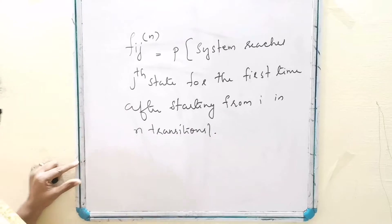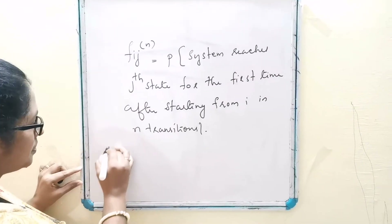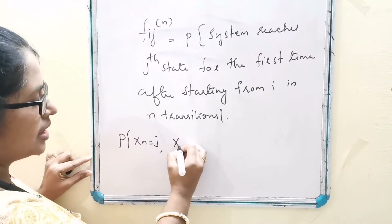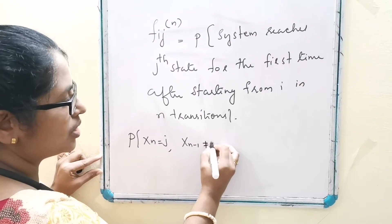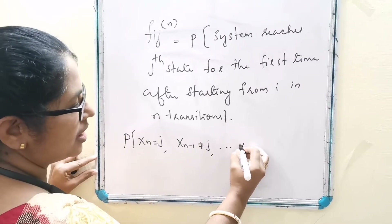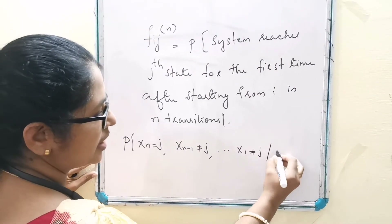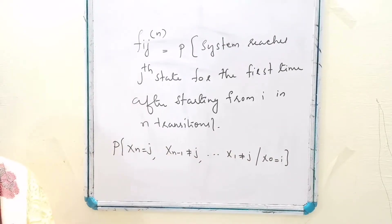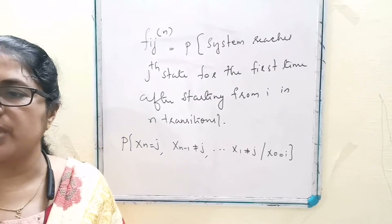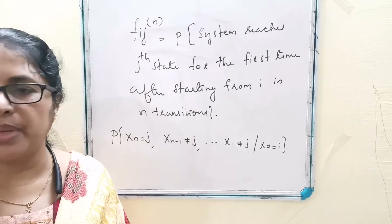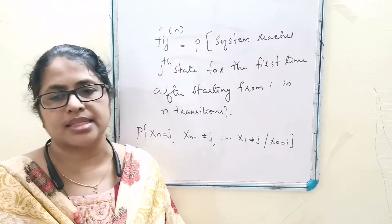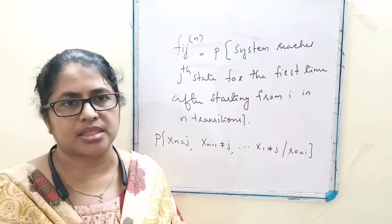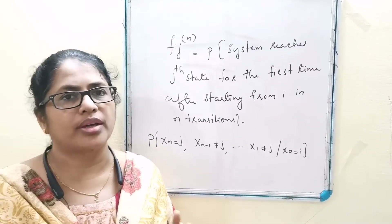That is, the probability of X_N equal to J, X_{N-1} not equal to J, and so on, X_1 not equal to J, given X_0 equal to I. The first passage probability may be computed based on elementary probability results, but the computation is a tedious method, so we adopt the following method.